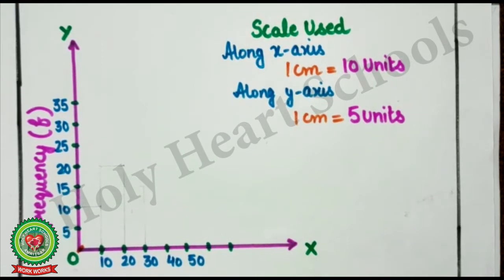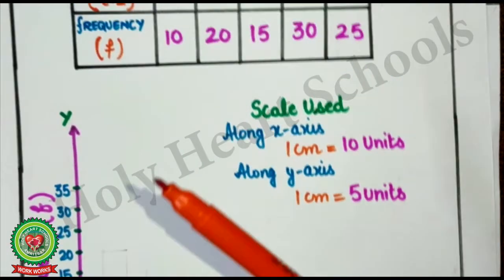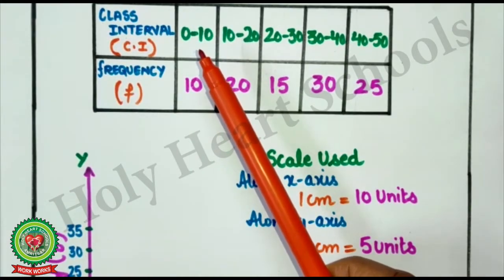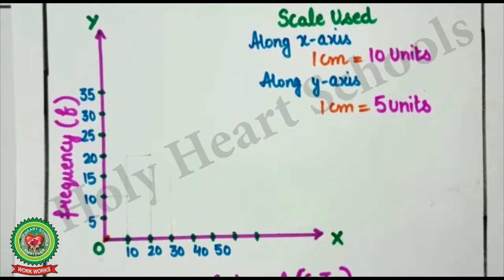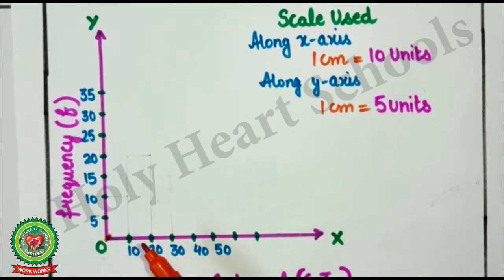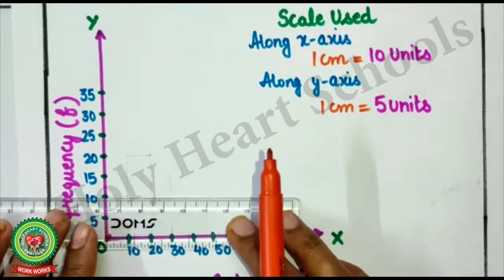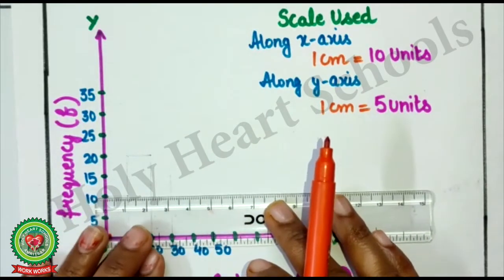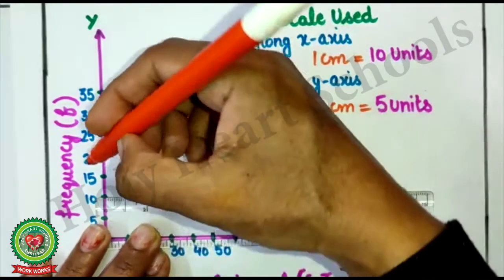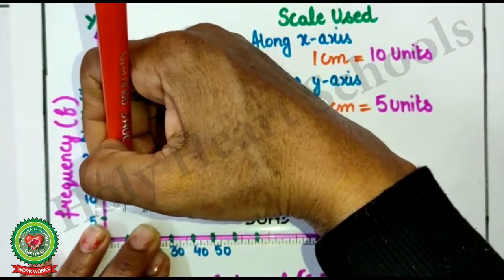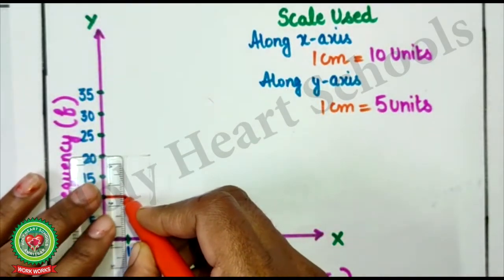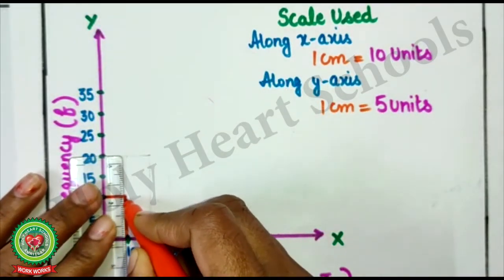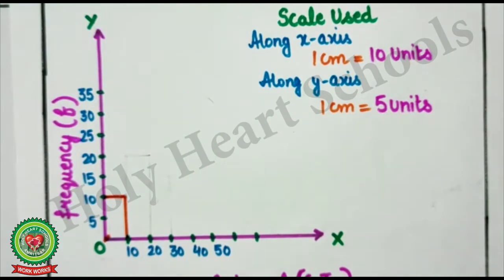Now, let's learn to draw histogram. Here, 0-10. Frequency is 10. Now, what to do? Here, we are having 0-10 interval. For this, I will select height of 10. Here, see. We are having 10. So, from here, at 1 cm. And join it at this point. So, in this way, we have drawn first bar.